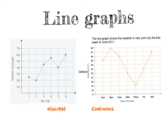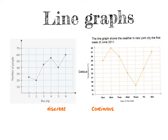Line graphs are also a good way of showing trends. As the bus trips increase it seems like the number of people increased. For the degrees Celsius graph, there was a drop towards Thursday and then a rapid increase towards Saturday. So line graphs are a lovely way of showing increases and decreases in data.